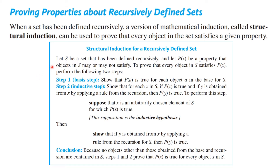Here's the way it works. Let S be a set that has been defined recursively, and p(x) is the property that objects in S may or may not satisfy. To prove that every object in S satisfies p(x), we perform the following steps. The basis step: show that p(a) is true for each object a in the base for S. The inductive step: show that for every x in S, if p(x) is true and y is obtained by applying a rule from the recursion, then p(y) is true. We suppose x is an arbitrarily chosen element of S for which p(x) is true, then show that p(y) is true. The conclusion is: because no steps other than those obtained from the base and recursion are contained in S, steps 1 and 2 prove that p(x) is true for every x in S. That probably isn't very clear in this form, but an example will make things much clearer.